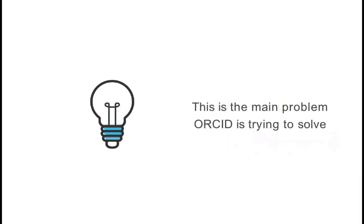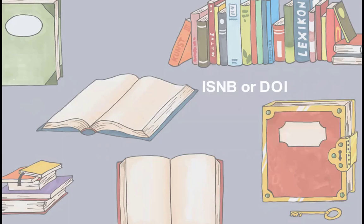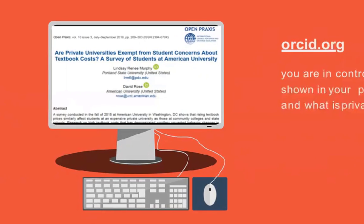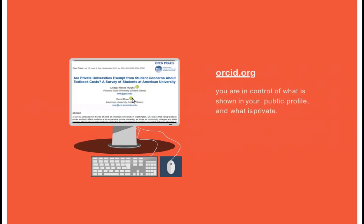ORCID IDs are unique and persistent identifiers. They are created and used by researchers and scholars, and they solve name ambiguity. Much like ISBN for books or DOIs for digital objects such as articles, ORCID generates a number so that the author can be identified using that particular string of numbers. This number ID can be attached to any new research output, such as the article shown here in this page. After each researcher's name there's an ORCID logo in green, and clicking on that number will link you to the author's ORCID page.